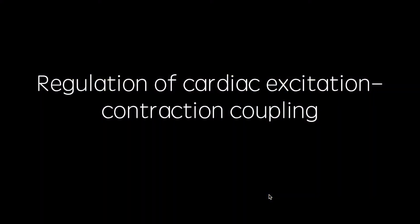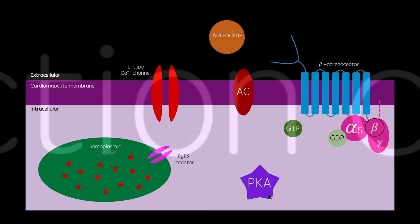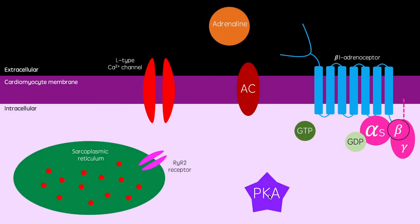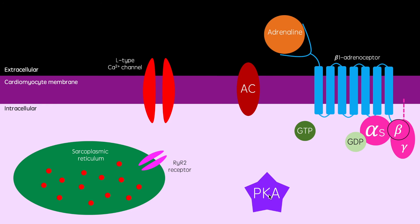So that was a brief overview of the process of cardiac excitation-contraction coupling, but it is important that this process is able to be regulated by the body. One example of this is adrenaline. During the fight-or-flight response, the body releases adrenaline.